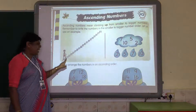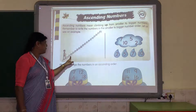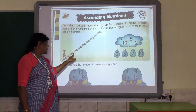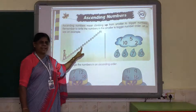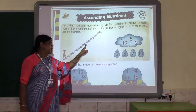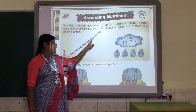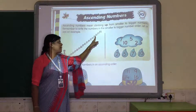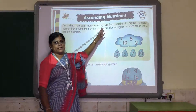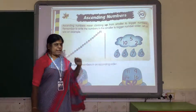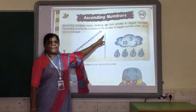Starting from 1, then 2, 3, 4, 5, 6, 7, 8, 9, 10, 11, 12, 13, 14, 15, 16, 17, 18, 19 — then he is reaching the biggest number, that is 20. So from the small number to the biggest number.